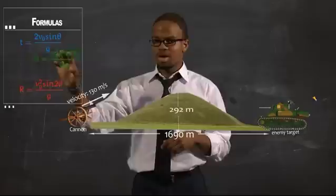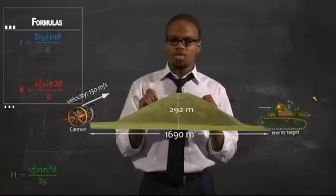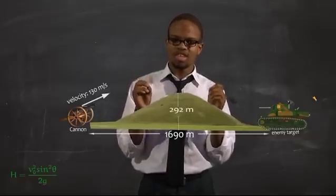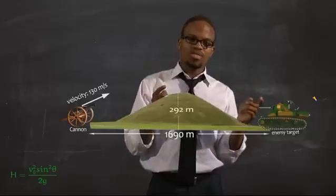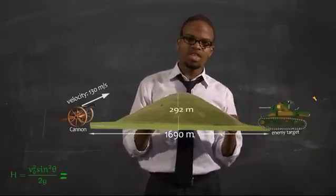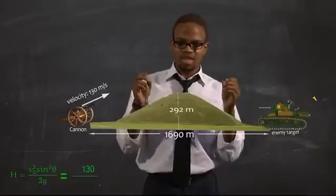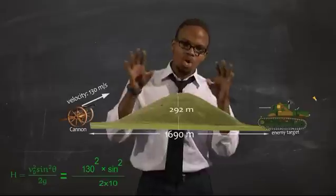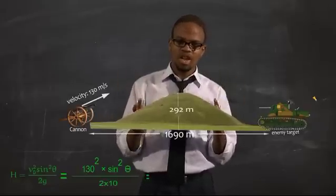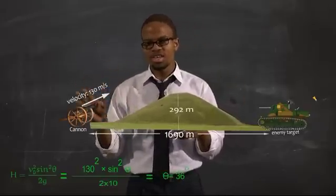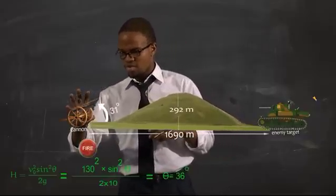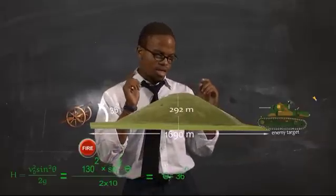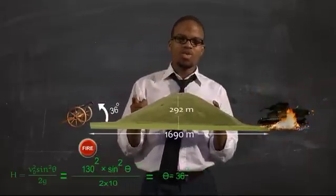We use the formulas we already talked about — the maximum height formula: v₀ squared times sin squared θ over 2g. Substituting our values: 130 squared times sin squared θ over 2 times 10. When we do all these calculations, theta is equal to 36 degrees. We adjust our cannon to 36 degrees and fire. That is how we do such things.